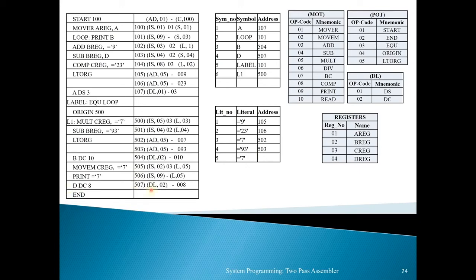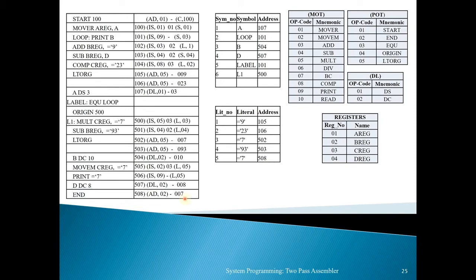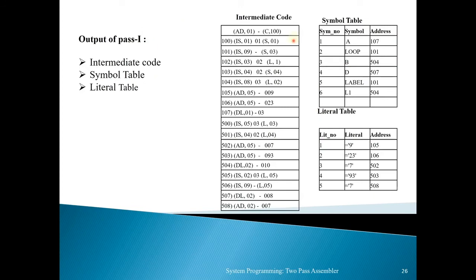Next is 'D DC 8' — using this statement we assign address 507 to symbol D. Intermediate code: (DL, 02) (-) (008), and D is added to the symbol table with address 507. Finally, the END statement signals the end of the program and assigns addresses to remaining literals. END is an assembly directive at position 02 in the POT. The remaining literal =7 in the third pool is assigned address 508. The output of pass one is the intermediate code, symbol table, and literal table.